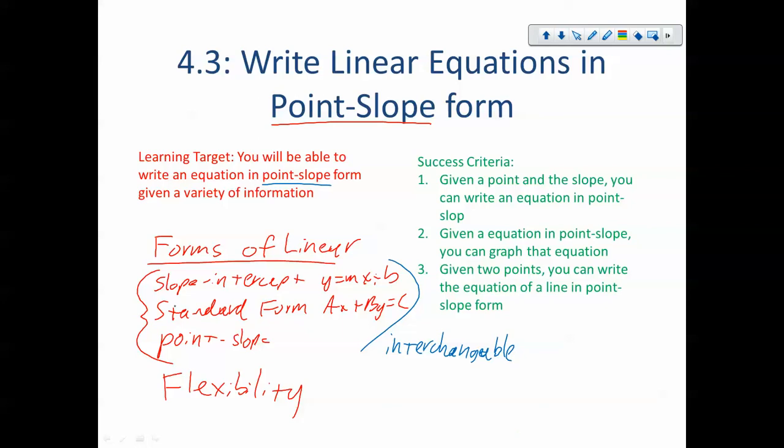So the learning target today is you're going to be able to write an equation in point-slope form given a variety of information. Throughout the chapter, you're going to be given a point and the slope and write an equation in point-slope form. You're going to be given an equation in point-slope and you're going to need to be able to graph it. And given two points, you can write the equation of a line in point-slope form.